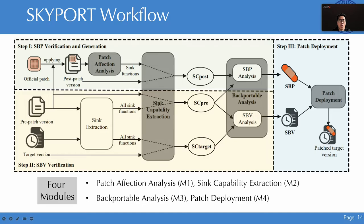This page shows the workflow of Skyport. To complete the three steps of patch backporting, Skyport leverages four key modules. The patch affection analysis module analyzes patch modifications and locates the sink functions. The sinkability extraction module extracts the sinkability based on the given sink function. The backportable analysis module analyzes and compares two given sinkabilities and verifies whether they meet the properties of SBP and SBV. The patch deployment module automatically deploys SBP on SBV with source code level modifications.